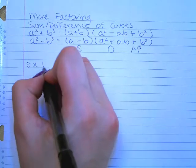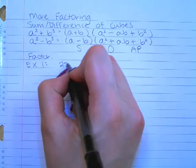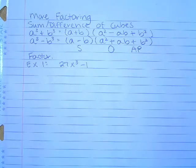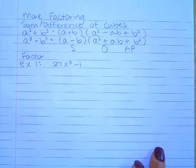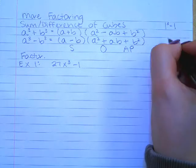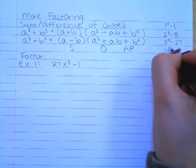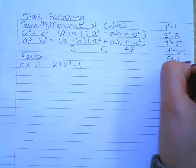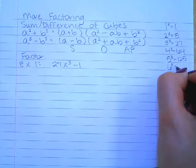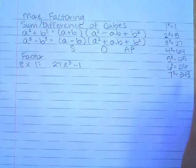Let's go ahead and do some examples. For example one, we have 27x to the third minus one. Before we go further, I'm going to write down some perfect cubes because they're less recognizable than perfect squares. One to the third is 1. Two to the third is 8. Three to the third is 27. Four to the third is 64. Five to the third is 125. Six to the third is 216. Seven to the third is 343.